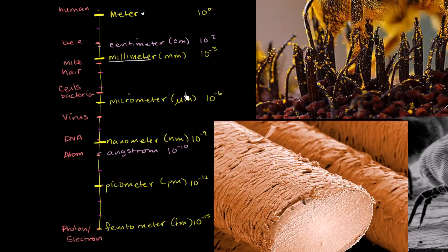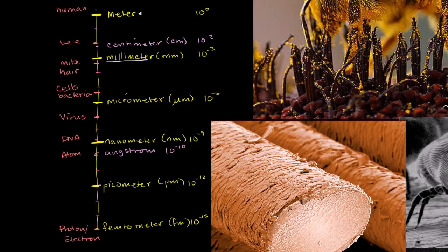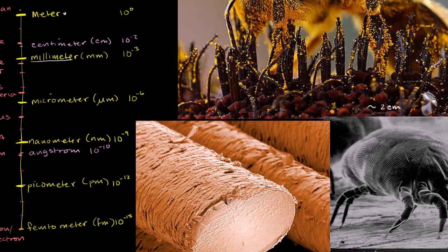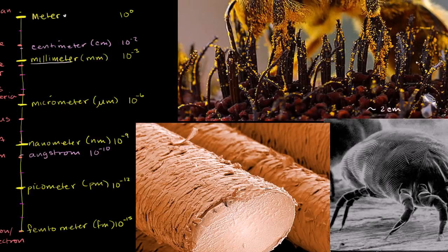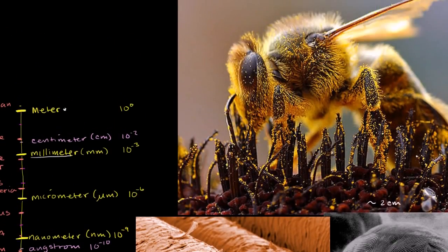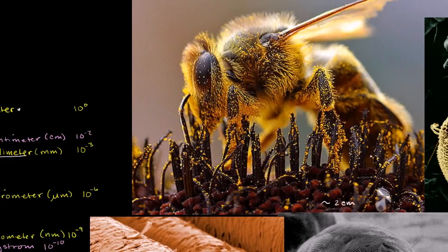Once you're familiar with the units, let's explore what types of things we can expect to find at these different scales. We'll start over here with the bee. The average bee is about 2 centimeters long. It's about 1 hundredth the length of the average adult human being.